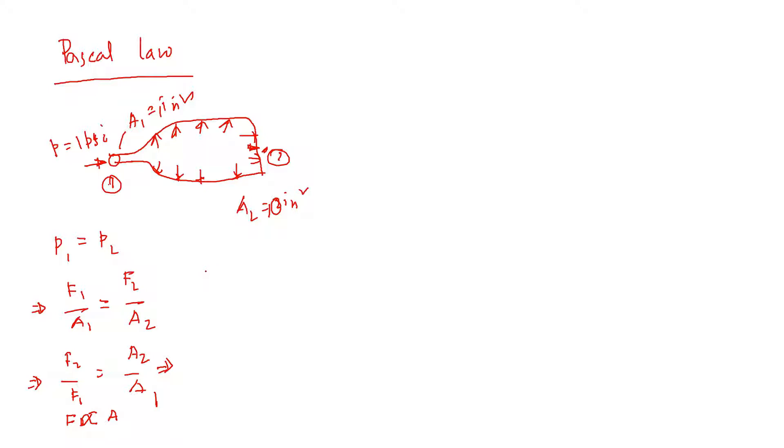So at point 1, F1 is basically 1 psi times 1 inch square, so it's basically 1 pound force. And then F2 will be 1 psi, same psi based on Pascal law, times the area square, so 10 inch square area, so it's going to be 10 pounds.